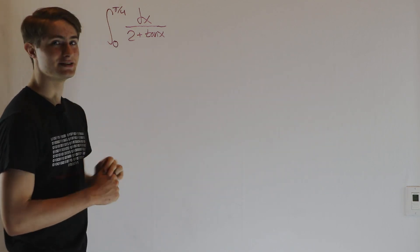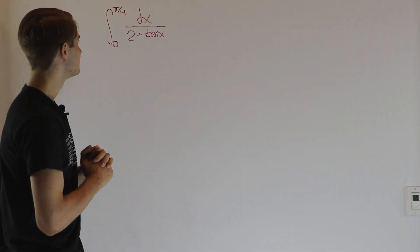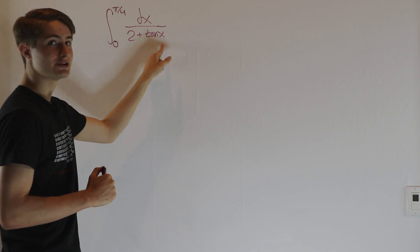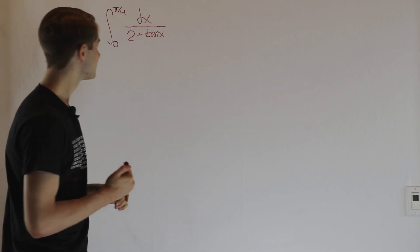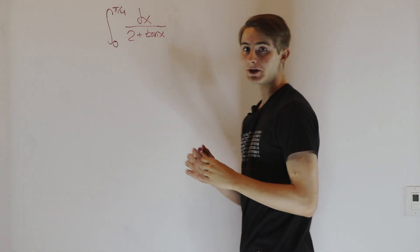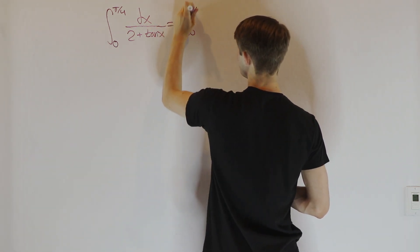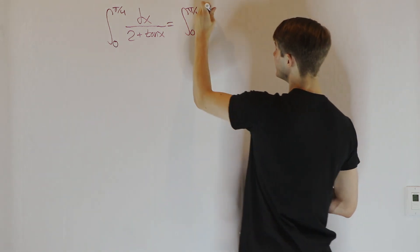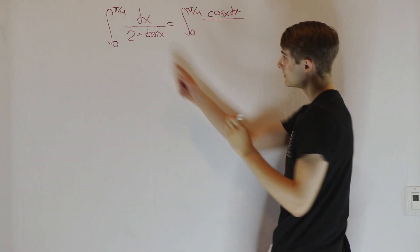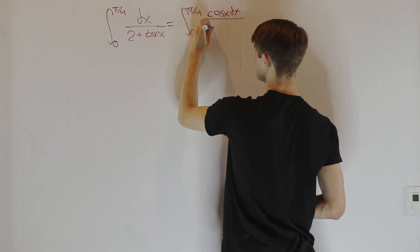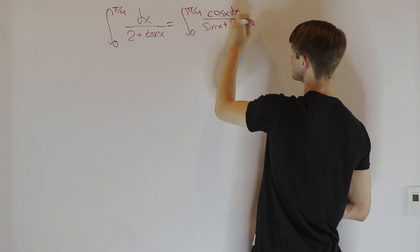We have a tangent x in the denominator, and there's no secant squared on top to help us out. So leaving this integral in terms of tangent x isn't really going to get us anywhere. Let's try multiplying the top and bottom by cosine x. We get the integral from 0 to π/4 of cosine x dx over sine x plus 2 cosine x.